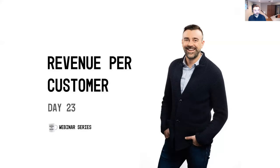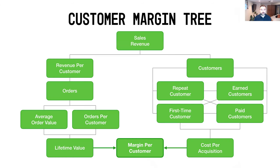So we are talking, like I said, day 23 — revenue per customer. Just to recap from yesterday's session, what we talked about is what we call the customer margin tree. On the left-hand side of the equation we've got our revenue per customer, talking from your sales revenue. Revenue per customer, multiplied by customers on the right-hand side, gives you your sales revenue. Revenue per customer breaks down further into the number of orders — your average order value times your orders per customer equals your revenue per customer, or your lifetime value.